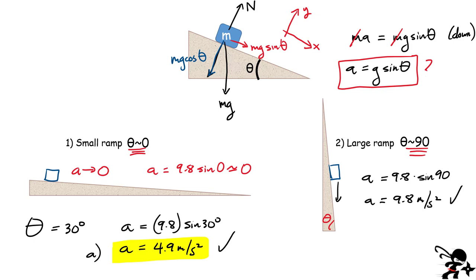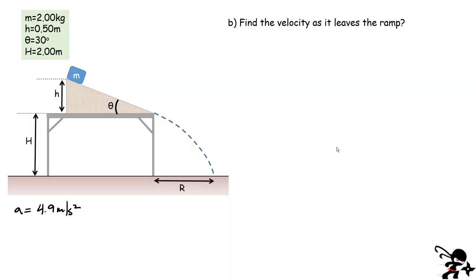Part B: find the velocity as it leaves the ramp. As it leaves the ramp, the block is right at the edge traveling in the direction of the ramp surface. So the velocity vector will have some angle — it's going to be launched at 30 degrees below the horizontal. Let me draw that separately. This is the direction of the velocity.